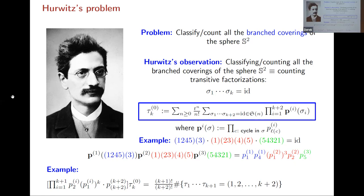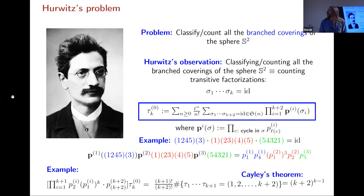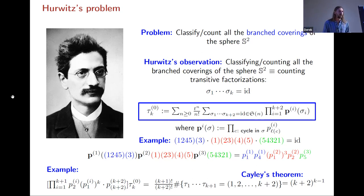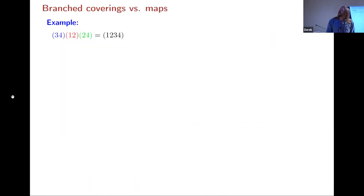Here's an example to check: what is the coefficient in τ of p₂ · p₁^k · pₖ₊₂? This means all the permutations are transpositions except the last, which is a long cycle. So essentially we want to count how many ways we can write a long cycle as a product of k+2 transpositions. By Cayley's theorem, this is given by (k+2)^(k−1). You may know Cayley's theorem as counting labeled trees, but it is the same thing.